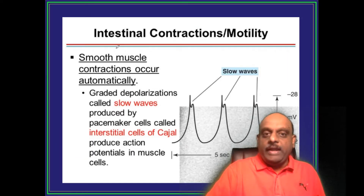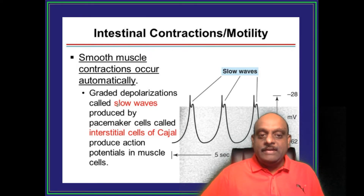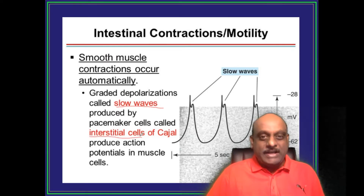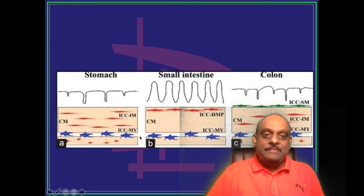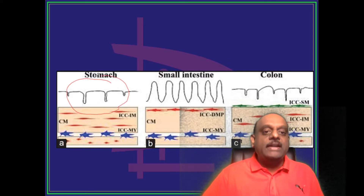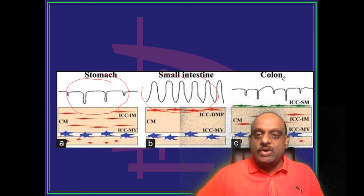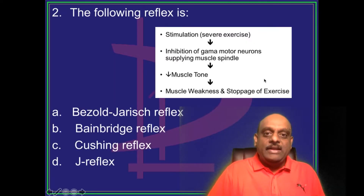For intestinal contractions and motility, there are slow waves which are generated, and it is the interstitial cells of Cajal — called pacemaker cells — that you need to remember. Looking at the stomach, small intestine, and colon: waves generated in the stomach have one morphology; the small intestine has slow waves; and the colon has a morphology you should be able to recognize and identify.